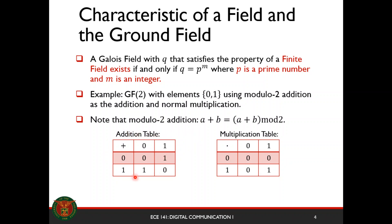The addition table is: 0 plus 0 equals 0, 1 plus 0 equals 1, and 1 plus 1 equals 0. The multiplication table is: 0 times 0 equals 0, 0 times 1 equals 0, 1 times 0 equals 0, and 1 times 1 equals 1. This is an example of a Galois field or a ground field. Other examples would be GF(3), GF(5), GF(7) — basically your number of elements should be a prime number raised to any integer m.